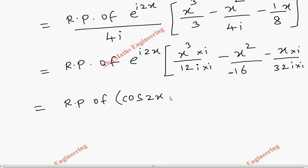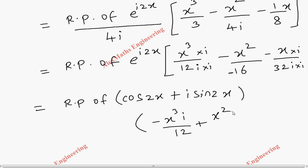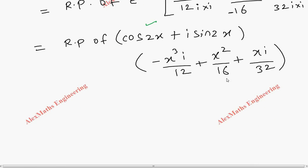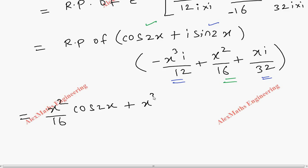Now replacing e^(i2x) with cos2x + i·sin2x and extracting the real part: we multiply the real terms (x²/16) by cos2x, and the imaginary terms (-x³/12 and +x/32) by i·sin2x. Taking only the real part: x²/16·cos2x + (-x³/12)·(-1)·sin2x... Collecting real contributions gives x²/16·cos2x + x³/12·sin2x - x/32·sin2x.